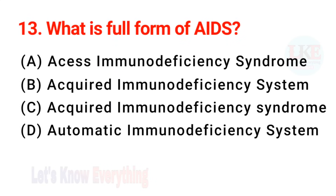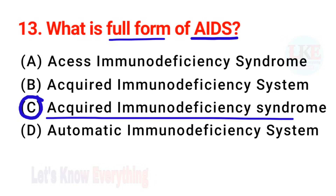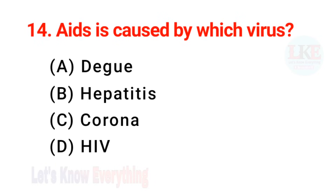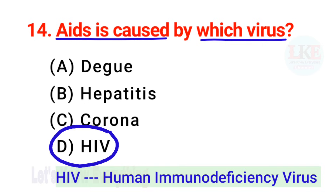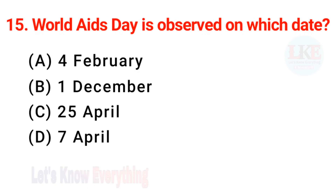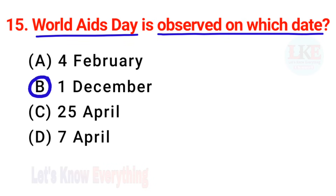Question number 13: what is the full form of AIDS? Right answer option C — Acquired Immunodeficiency Syndrome. AIDS is caused by which virus? Right answer option D — HIV virus. Full form of HIV is Human Immunodeficiency Virus. Question number 15: World AIDS Day is observed on which date? Right answer option B — 1st December.